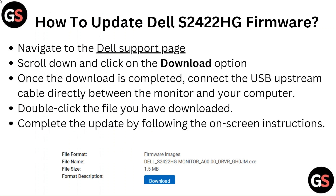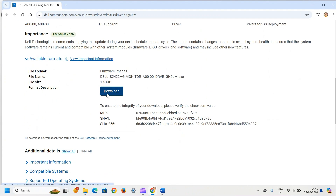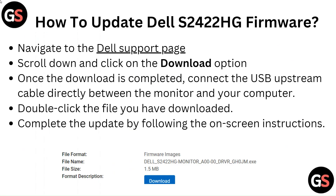To update the Dell S2422HG, navigate to the Dell support page, scroll down and click on the download option. Once the download is completed, connect the USB upstream cable directly between the monitor and your computer. Double click the downloaded file and complete the update by following the on-screen instructions.